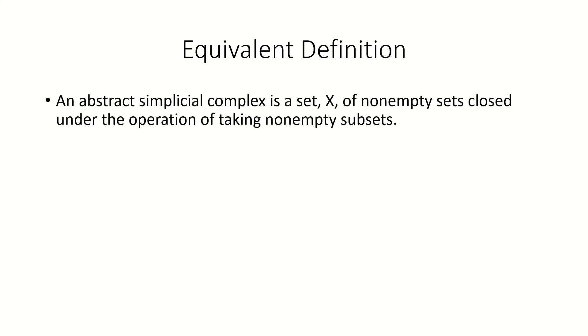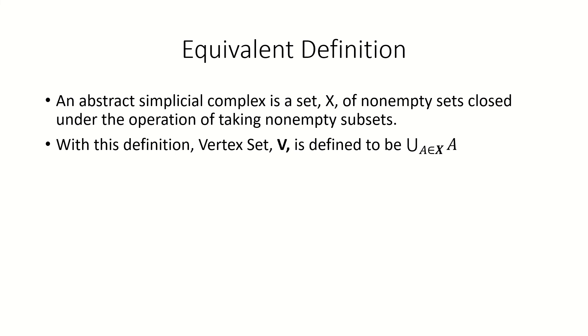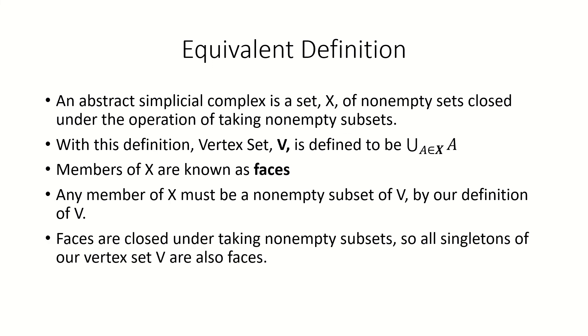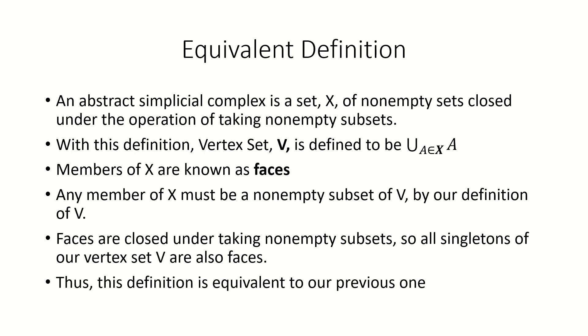Moving on, an equivalent way to define an abstract simplicial complex using just one property is that it's a set of non-empty sets closed under the operation of taking subsets. We can then define the vertex set to be the union of all the sets in X. Since the faces are closed under taking subsets and every member of the vertex set is in at least one face, we automatically get that the singletons of elements in the vertex set are faces, meaning that our two definitions are equivalent.